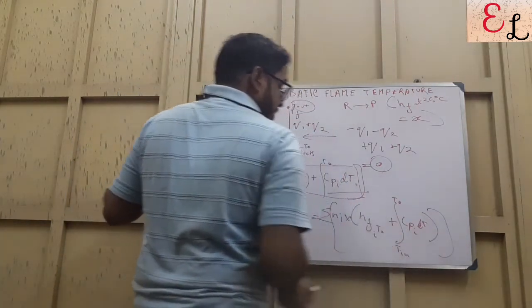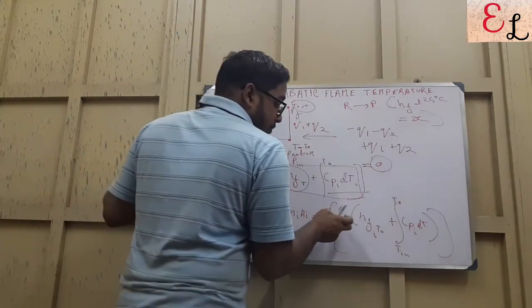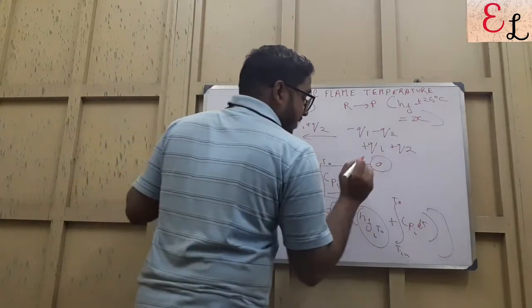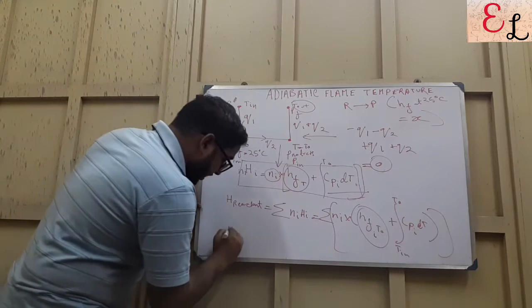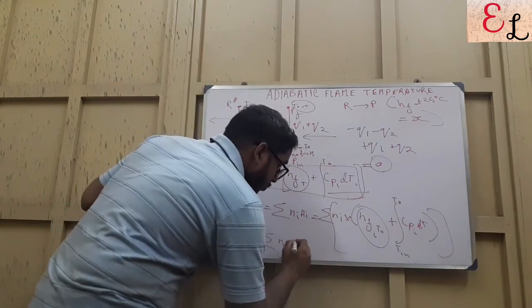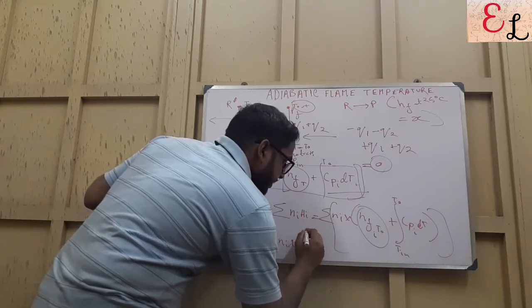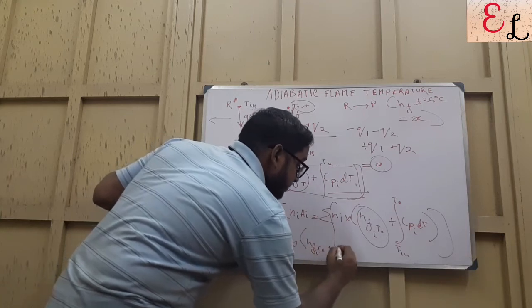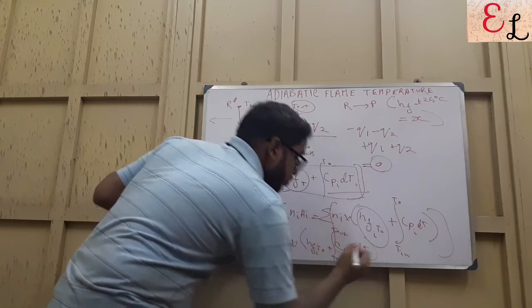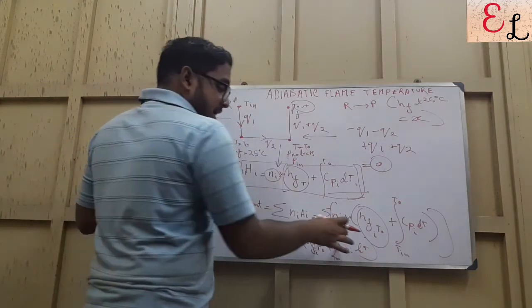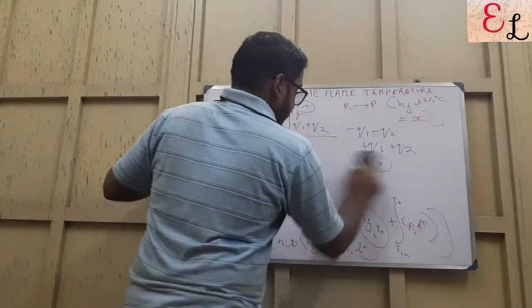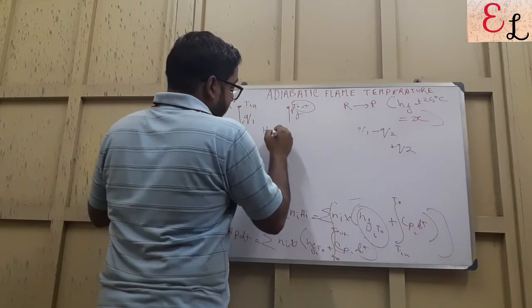So for each component we need to calculate this. If we know T_in, if we know the number of moles of each compound, and if we know the heat of formation of each compound, then we can find out the final T_out by similarly considering H_products as sigma of Ni into [H_F(T0) plus the integral of Cp_i dT from T0 to T_out].